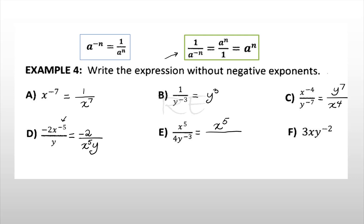We keep x to the 5th where it is. We keep 4 where it is. y to the negative 3 becomes y to the positive 3 — we displace the base. 3x stays where it's supposed to be. y to the negative 2 becomes y to the 2nd in the denominator. And we're done.